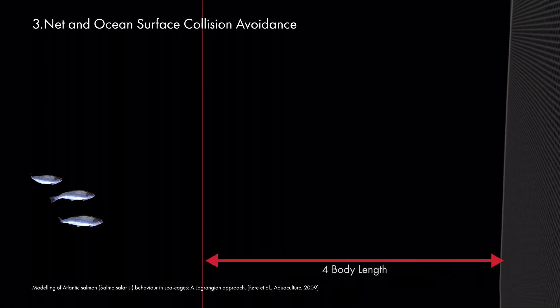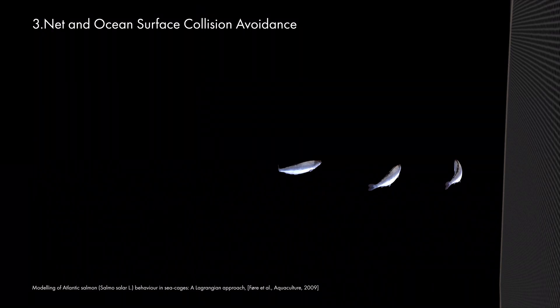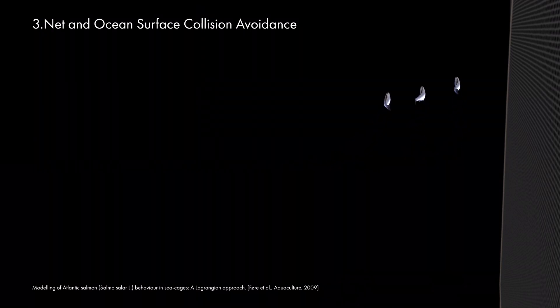We added a biologically based rule to handle collision avoidance with walls. When a fish comes within four body lengths of a wall, it engages in avoidance behavior. The closer a fish is to the wall, the stronger the force it feels, and the more it changes its direction.